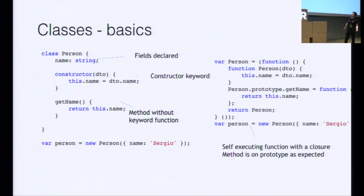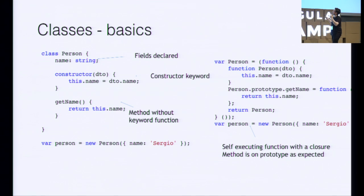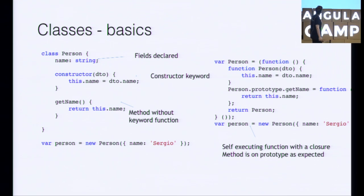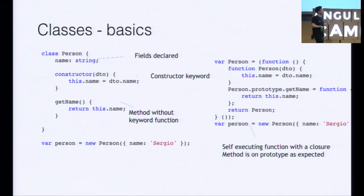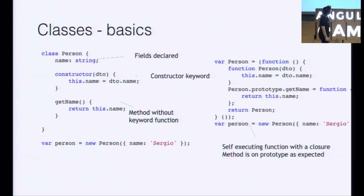Classes are a pretty nice thing. They're not exclusive to TypeScript — they're there in ES6 too. We have a class with a constructor with input parameters, and functions are methods without the function keyword. On the right in ES5, we can see it generates a self-executing function with a constructor function person, and the methods end up on the prototype.